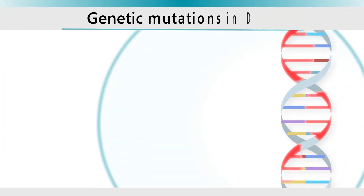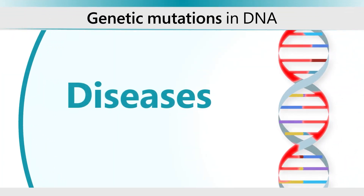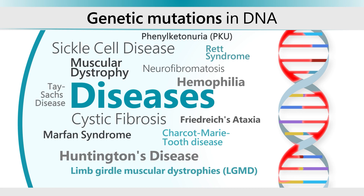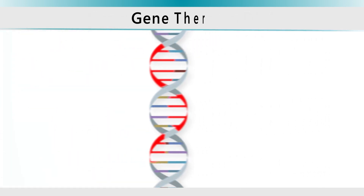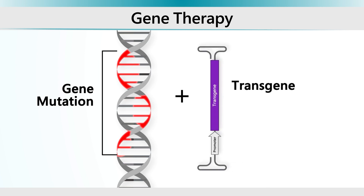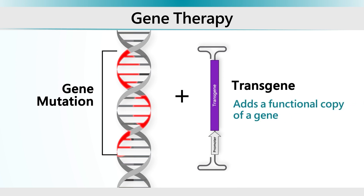Genetic mutations in DNA can lead to a variety of different diseases in humans. Gene therapy addresses genetic diseases at the source by adding modified functional genes called transgenes to cells and tissues. Classically, gene therapy has been used to add a functional copy of a gene and does not replace the mutated version in genomic DNA.